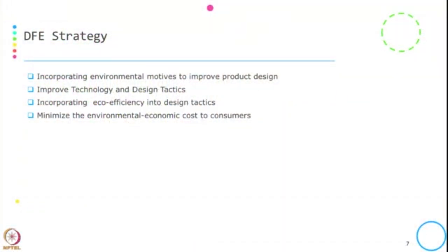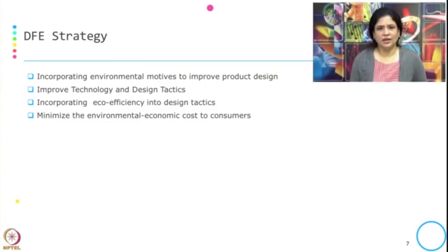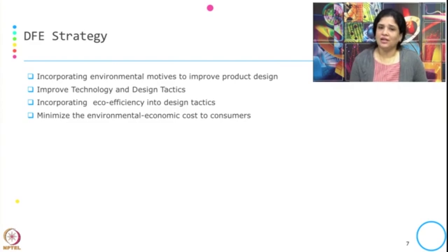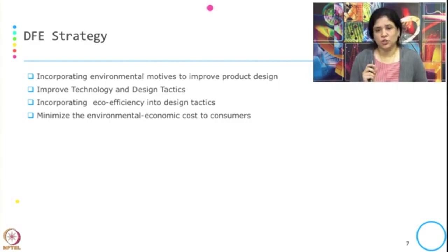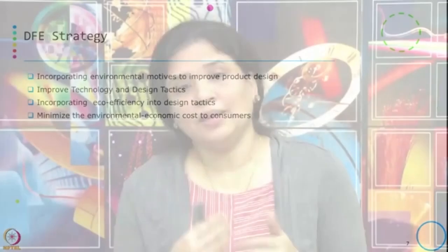What are the DFE strategies? There are four strategies of DFE: incorporating environmental motives to improve product design, improving technology and design tactics, incorporating eco-efficiency into design tactics, and minimizing the environmental and economic cost to the consumer. The first two are mostly about keeping space for recycling and making recycling resources part of the product. The second two are mostly about dematerialization — incorporating eco-efficiency into design tactics so that we produce more with less resources and minimize environmental and economic cost to the consumer.